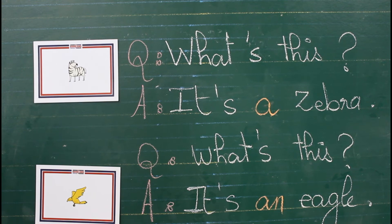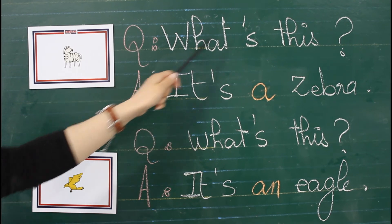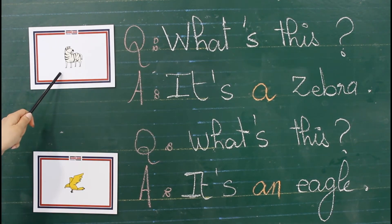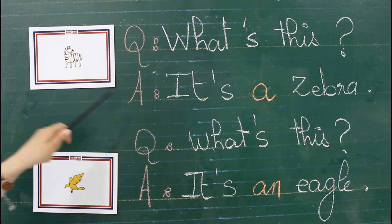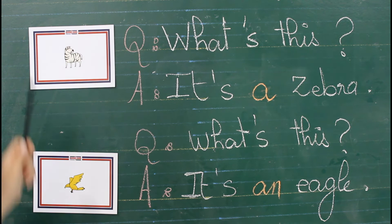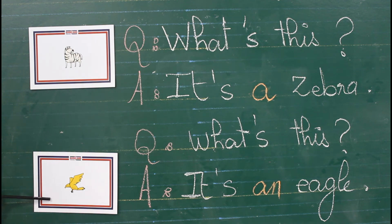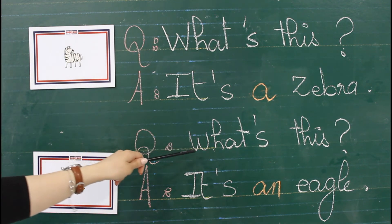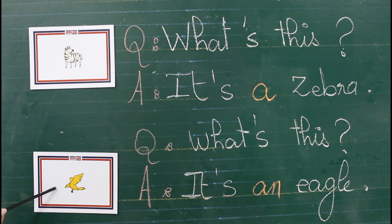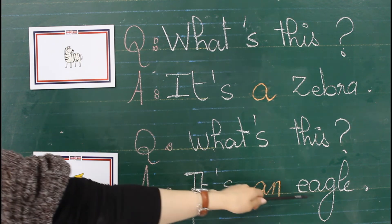To ask about animals, we say: What's this? The answer is: It's a zebra. Look at the second example. What's this? It's an eagle. Notice the difference here — we have 'a zebra' and 'an eagle'.